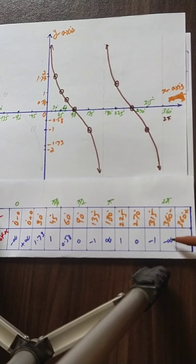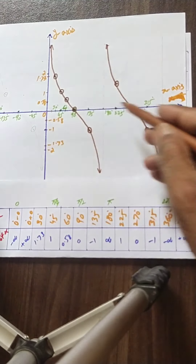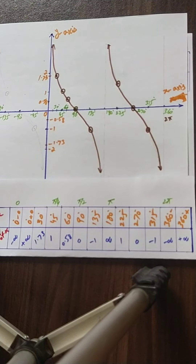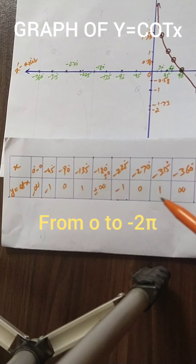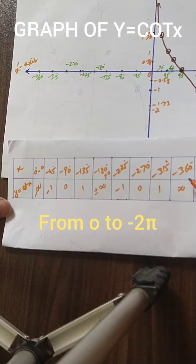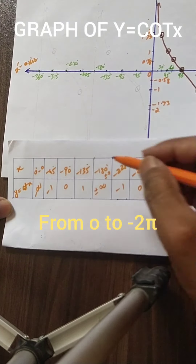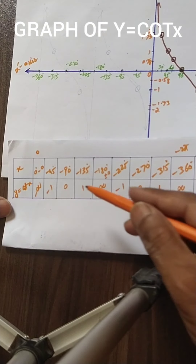At 360 degrees, at 360 minus 0, the value is minus infinite, and after 360 degrees it goes to plus infinite. This is the complete graph from 0 to 360 degrees, or 0 to 2π. Now we plot the graph from 0 to minus 360 degrees, or minus 2π. This is the table of the cotangent function, y equal to cot x.